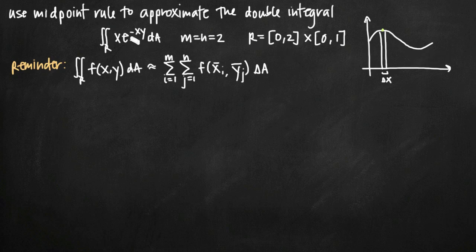Now when we're dealing with two-variable functions — multivariable functions — we're going to find volume instead of area, so we've just added an additional dimension.